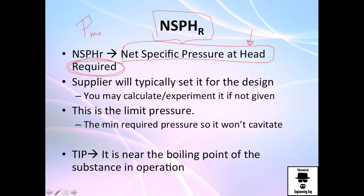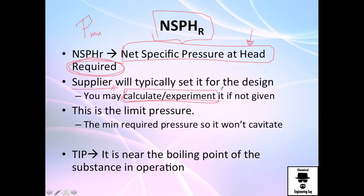This minimum pressure to avoid cavitation can be calculated experimentally, but you don't want to do that because it means forcing your pump into cavitation. So this data is already provided by the supplier — it's in the manual along with typical performance data: power requirements, maximum RPM, maximum impeller diameter, and so on. You will find the NPSH requirements there. If you don't have supplier data, you'll need to determine it yourself, but it is essentially a minimum limit pressure before the fluid enters the pump.